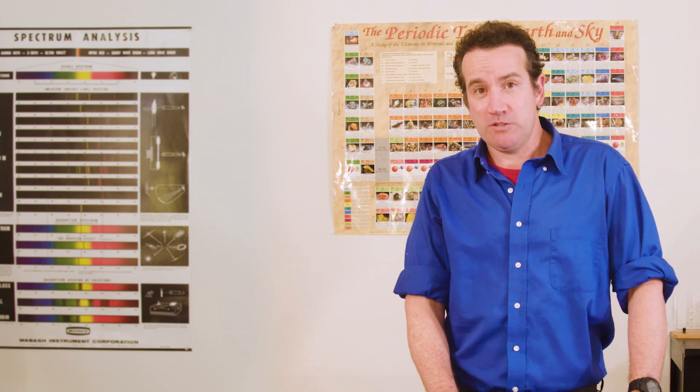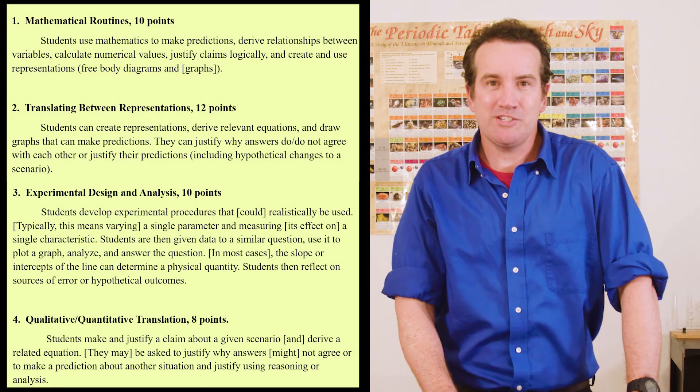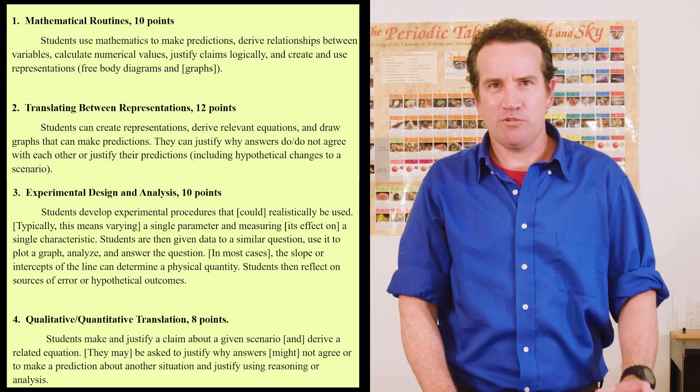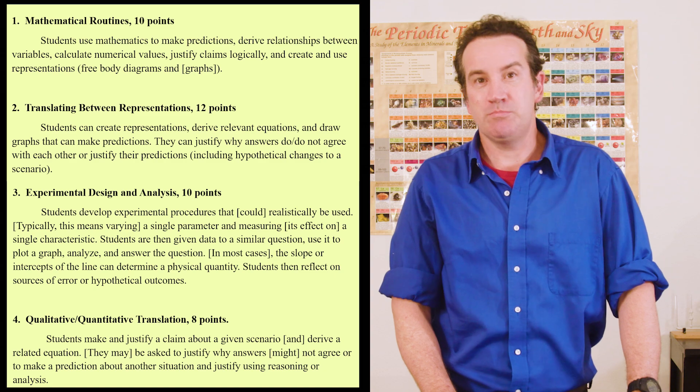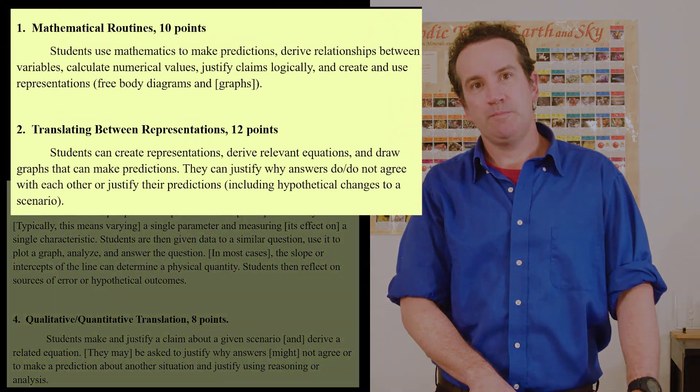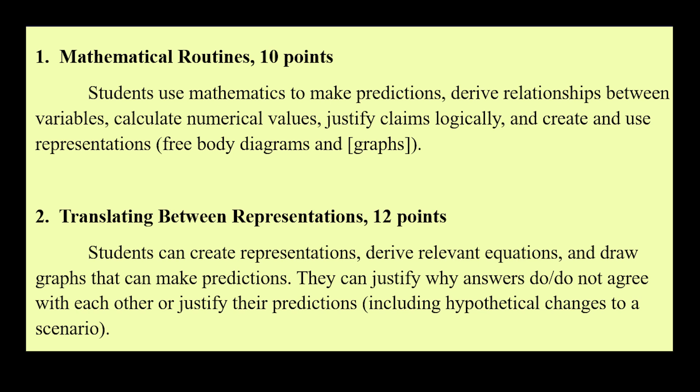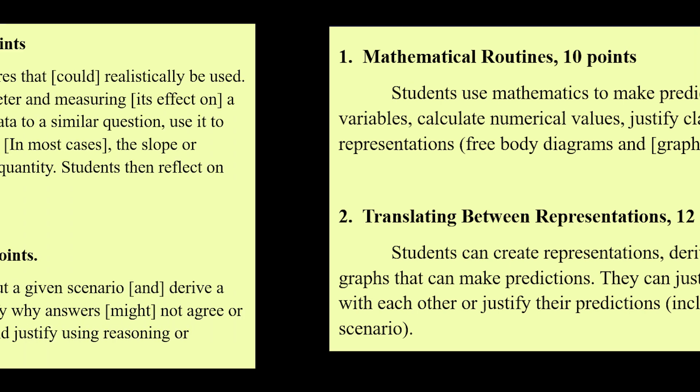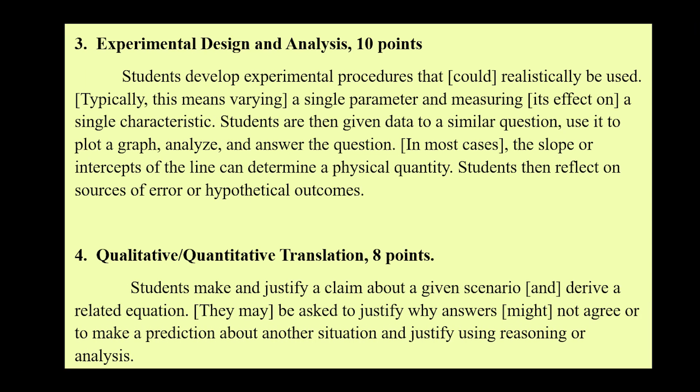The types of free response questions are now standardized, and here's a chart that summarizes the four question types and what to expect, including the order of the questions. Number one, mathematical routines, 10 points. Number two, translating between representations, 12 points. Number three, experimental design and analysis, 10 points. Number four, qualitative and quantitative translation, 8 points.